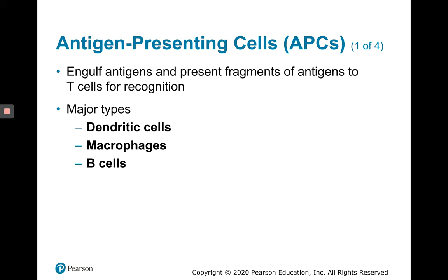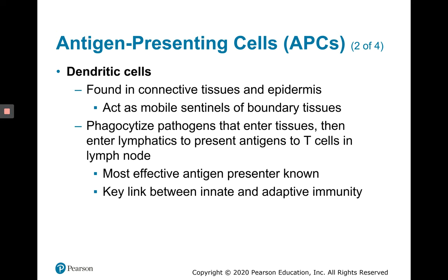Antigen-presenting cells include dendritic cells, macrophages, and B cells, with dendritic cells being the best antigen-presenting cell. APCs engulf antigens and present fragments to T cells for recognition. Dendritic cells are found in connective tissues and the epidermis, acting as mobile sentinels of boundary tissues. They phagocytose pathogens, break them up, and enter lymphatics to present antigen fragments on MHC proteins to T cells in lymph nodes. Dendritic cells are the most effective antigen-presenters known and are a key link between the innate and adaptive immune systems.